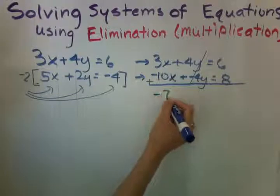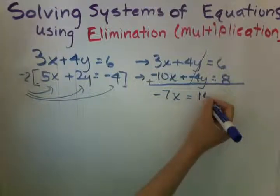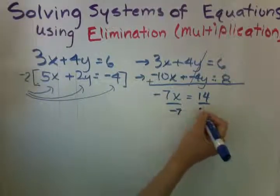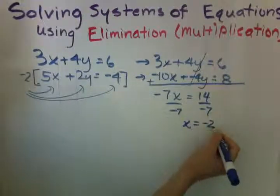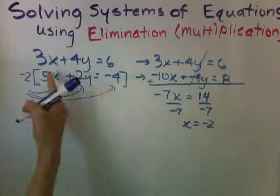Here we get a negative 7x equals 14. Divide both sides by negative 7. Remember that we haven't finished the problem until we solve for y as well.